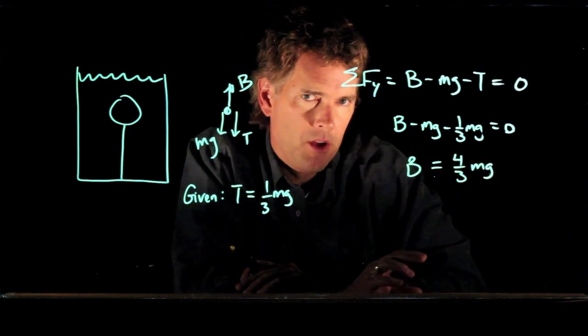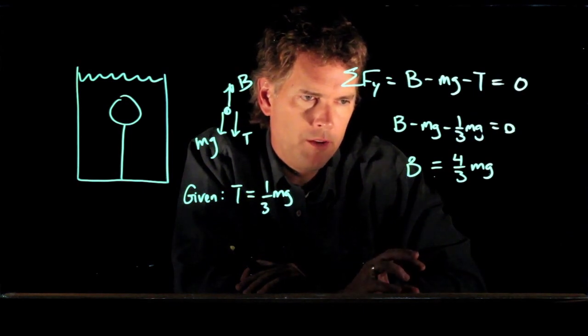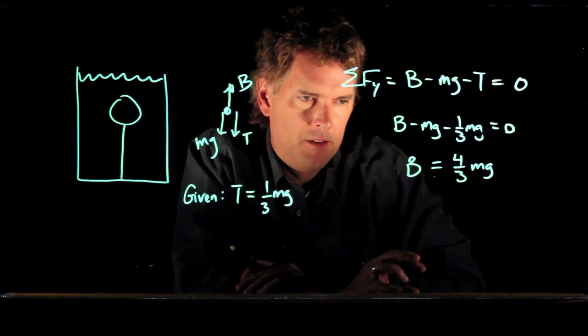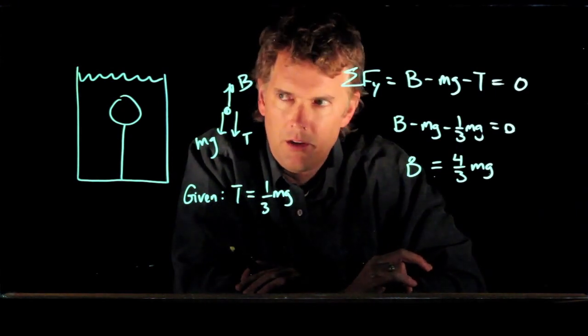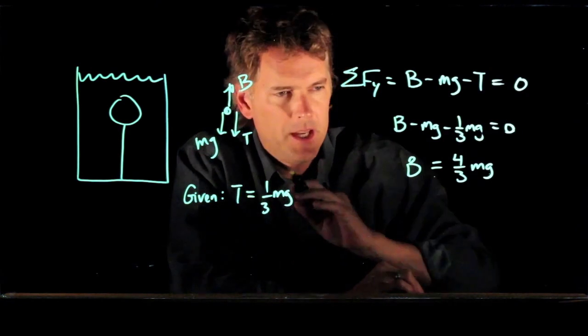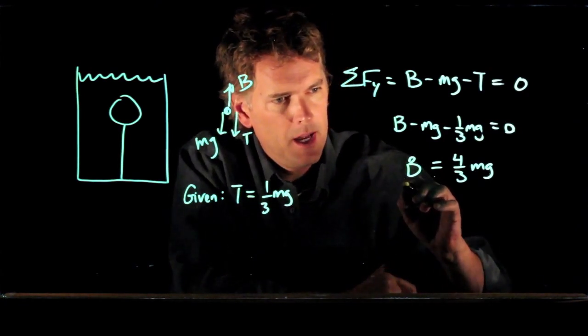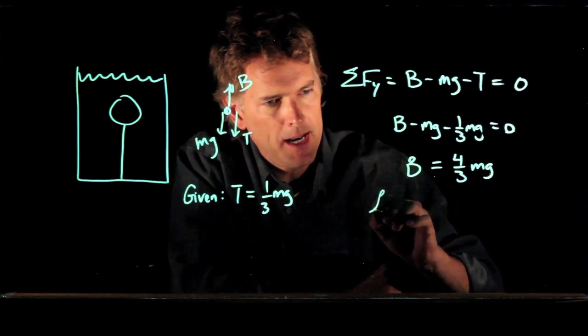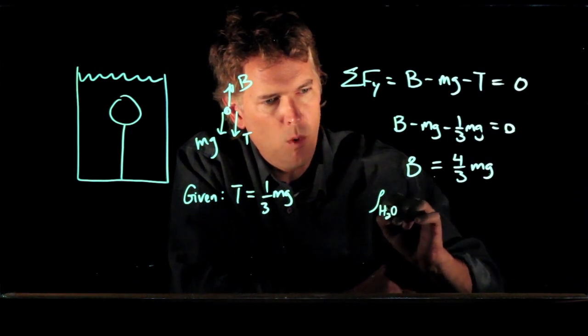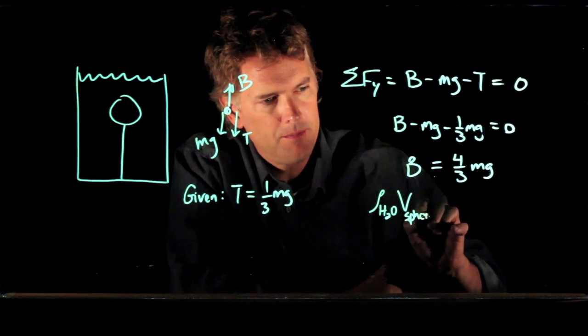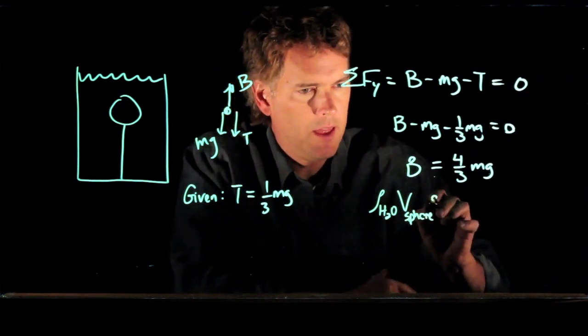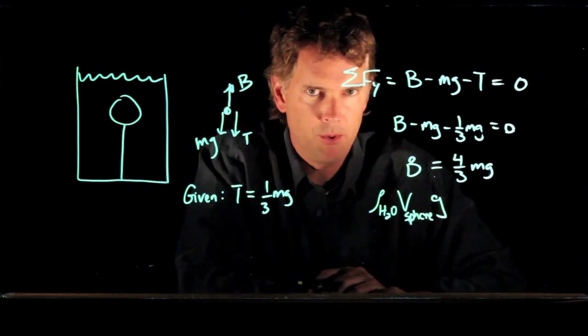But we also know that the buoyant force is the weight of the displaced fluid. So this thing is a sphere, it displaced water. And so the buoyant force we can write as the density of water times the volume of that sphere. That gets us a mass, and then we have to multiply by gravity.